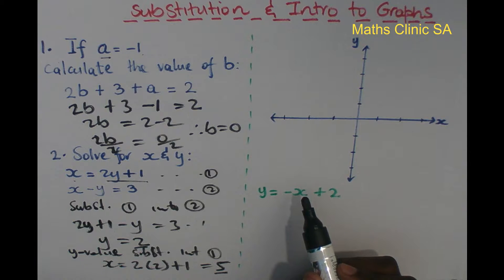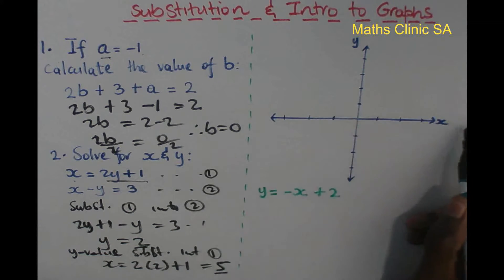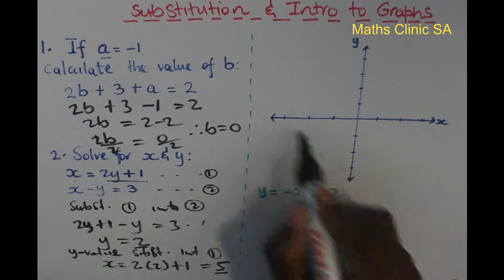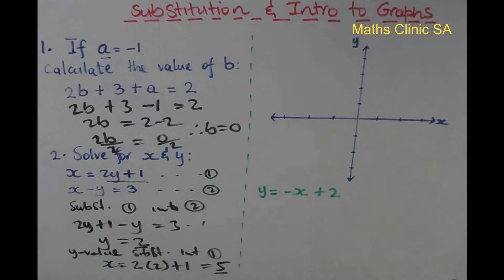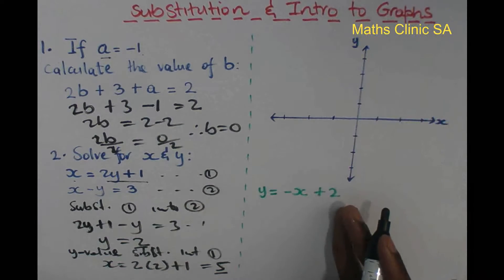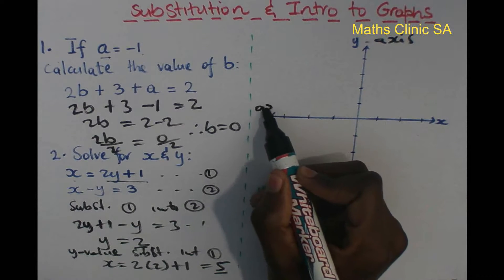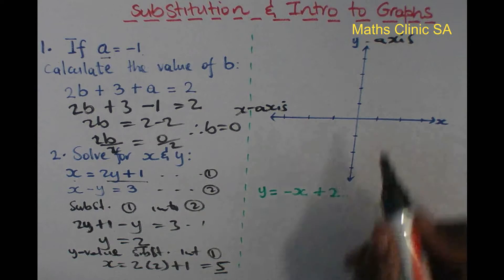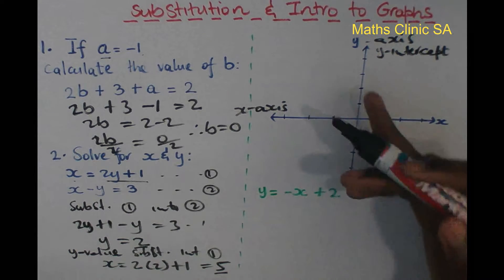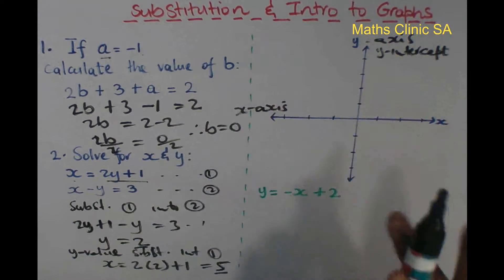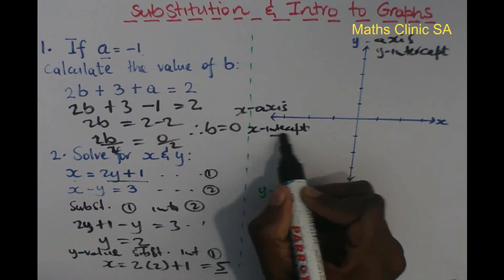For a straight line, we can find where it cuts the axes. The y-intercept is where the line cuts the y-axis, and the x-intercept is where it cuts the x-axis horizontally.